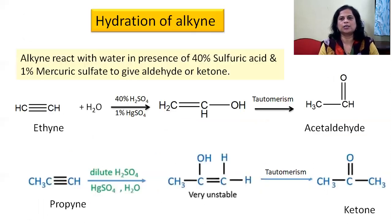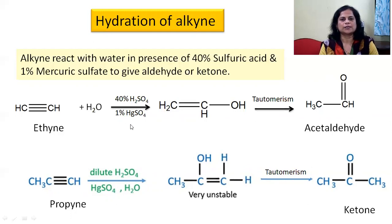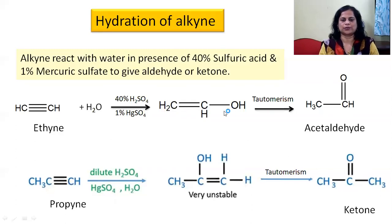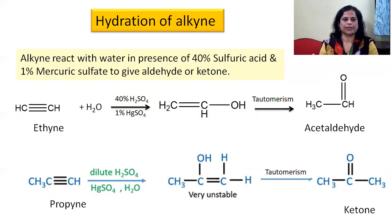The next reaction is hydration of alkynes. When alkynes react with water in the presence of 40% sulfuric acid and 1% mercury sulfate, they give aldehydes or ketones. Ethyne when reacts with water in presence of 40% H2SO4 and 1% mercuric sulfate: the triple bond converts to a double bond — hydrogen is added on one carbon atom and OH group on the other from H2O — giving vinyl alcohol (CH2=CHOH).